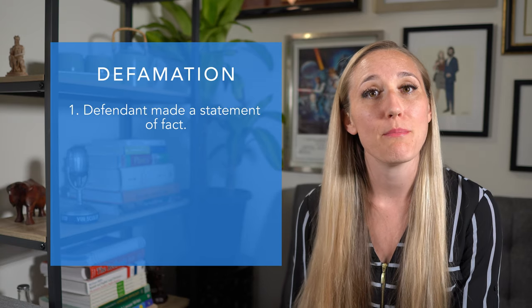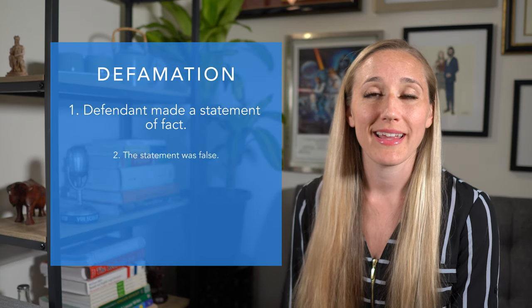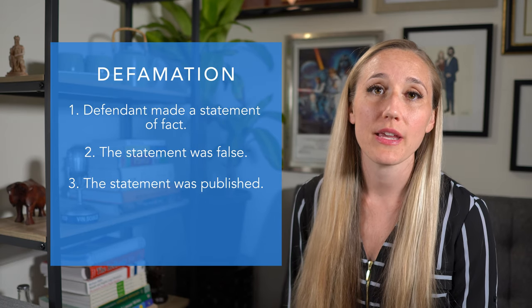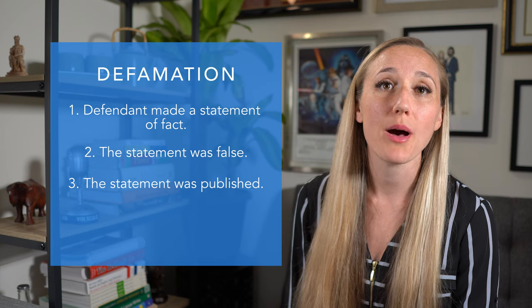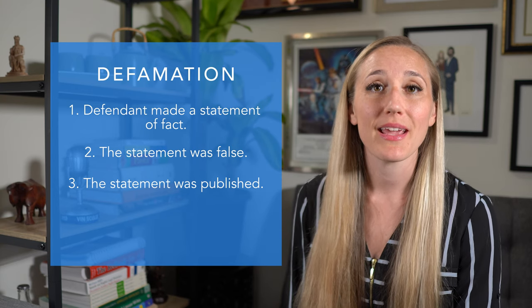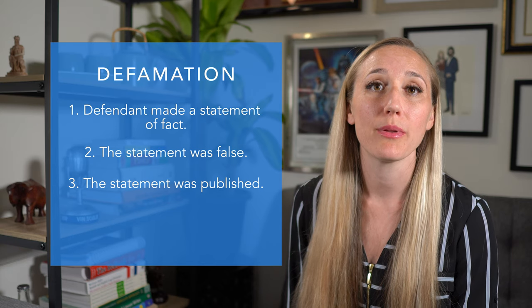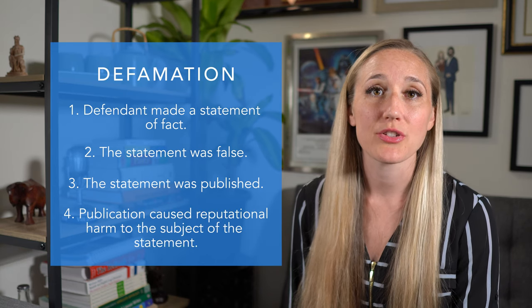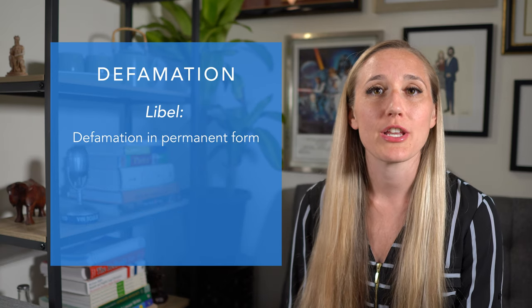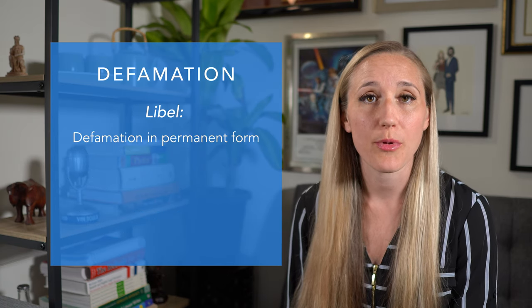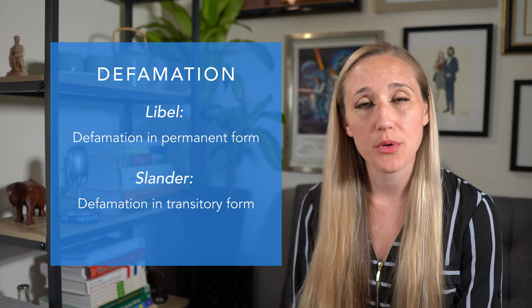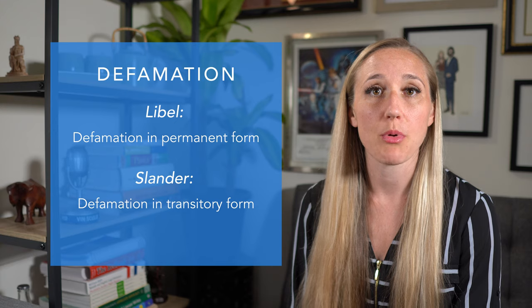They'd have to show that that statement of fact was false. Then they'd also have to show that the statement of fact was published, meaning that it was made to a third party. And finally, they'd have to show that the publication of that statement actually caused harm to the reputation of that person. Defamation includes libel, which is defamation in a permanent form — meaning in writing, for example — and it also includes slander, which is spoken.